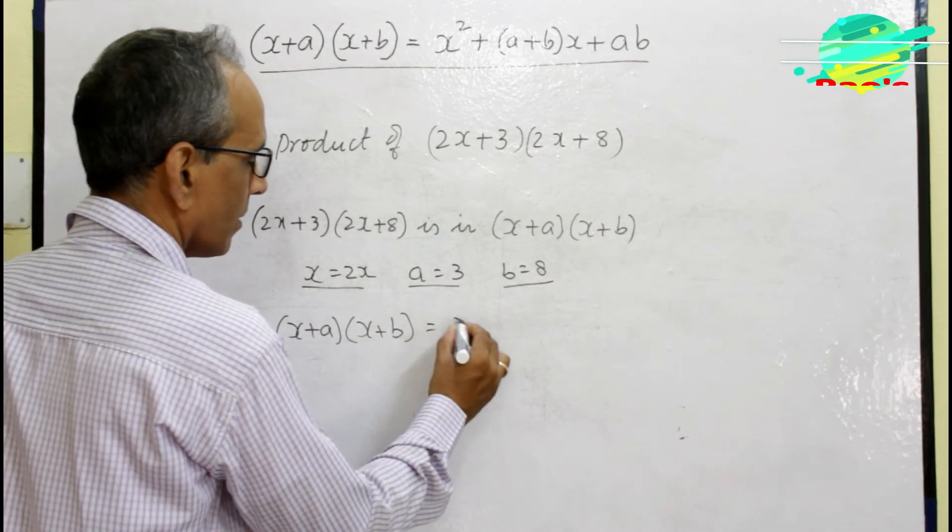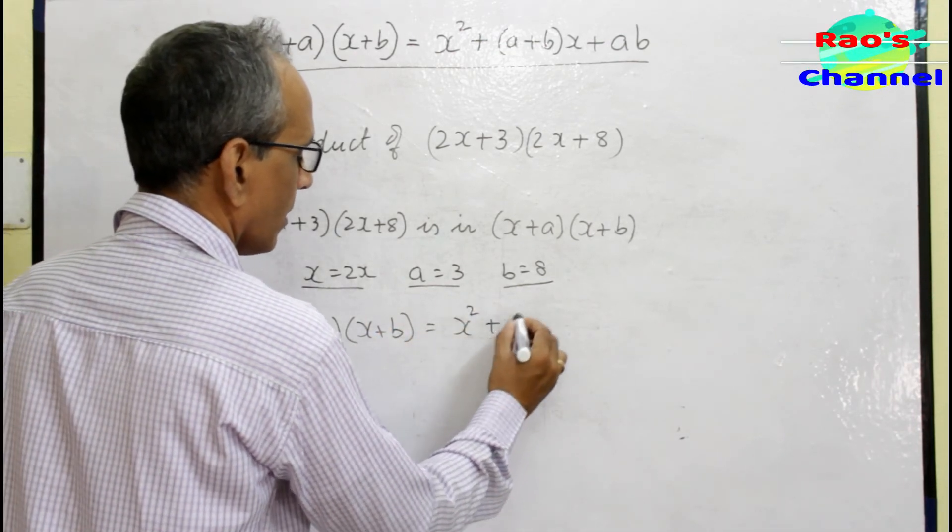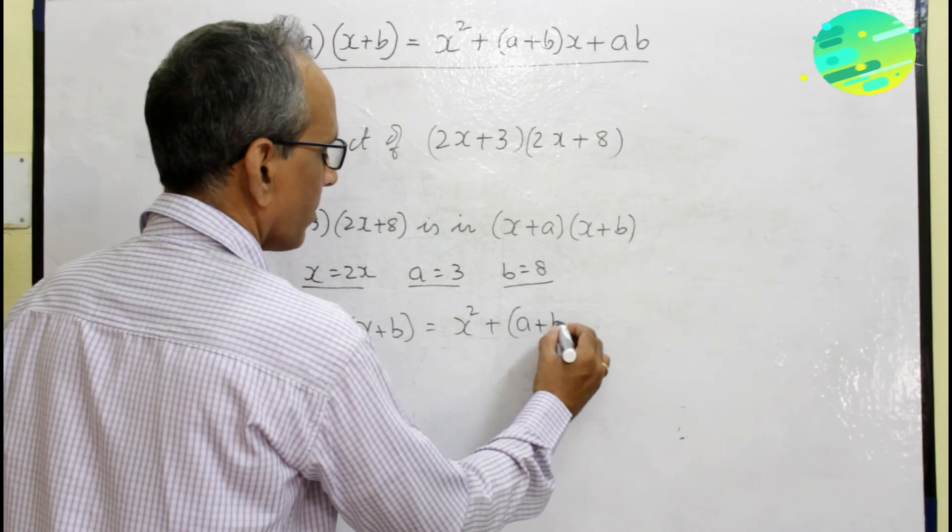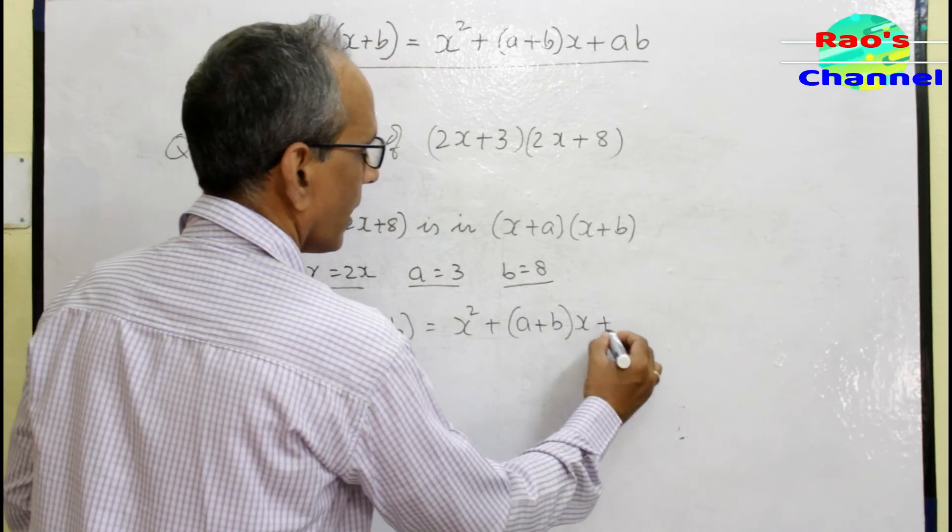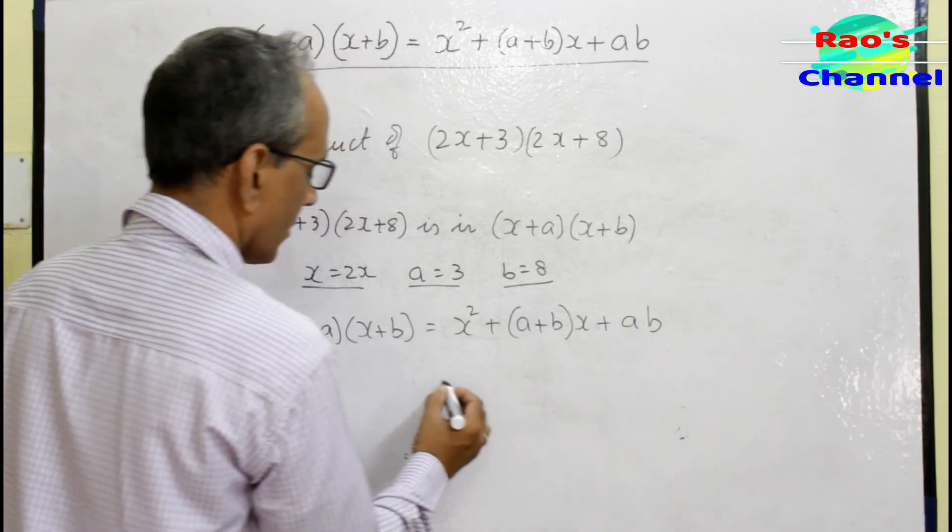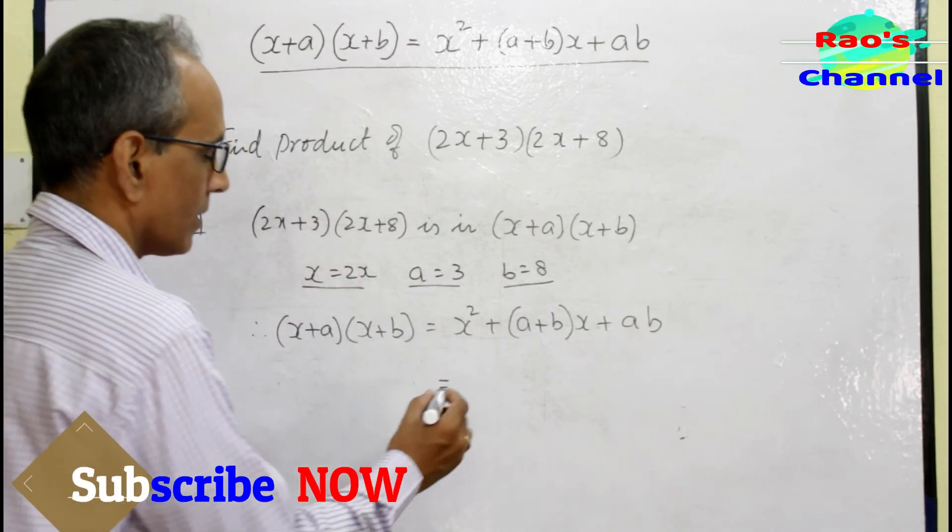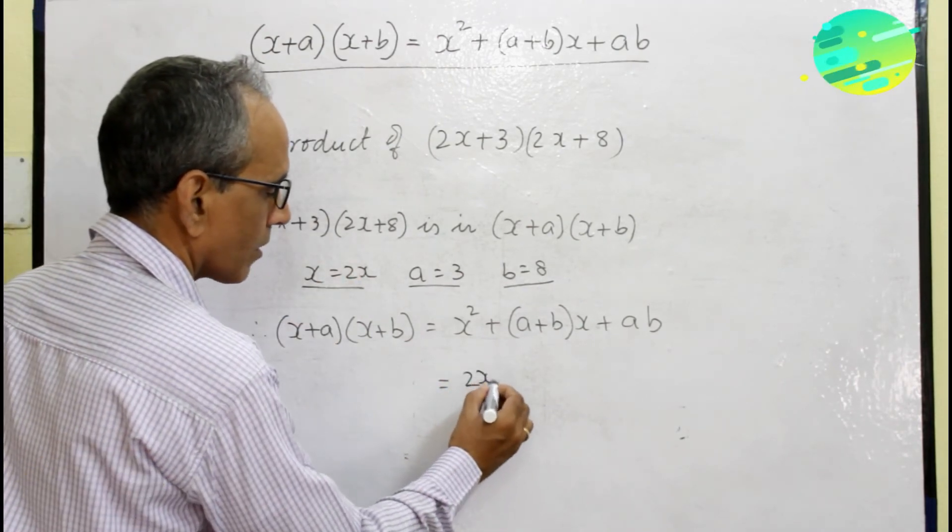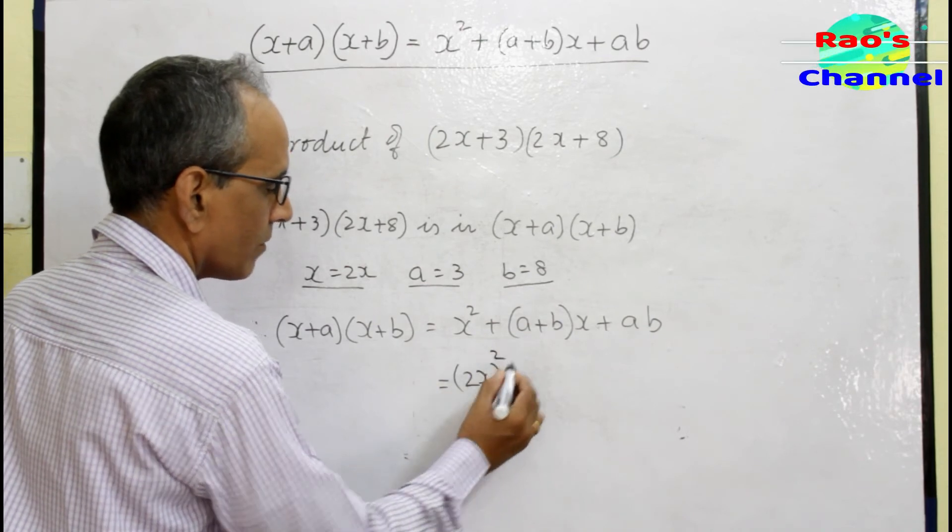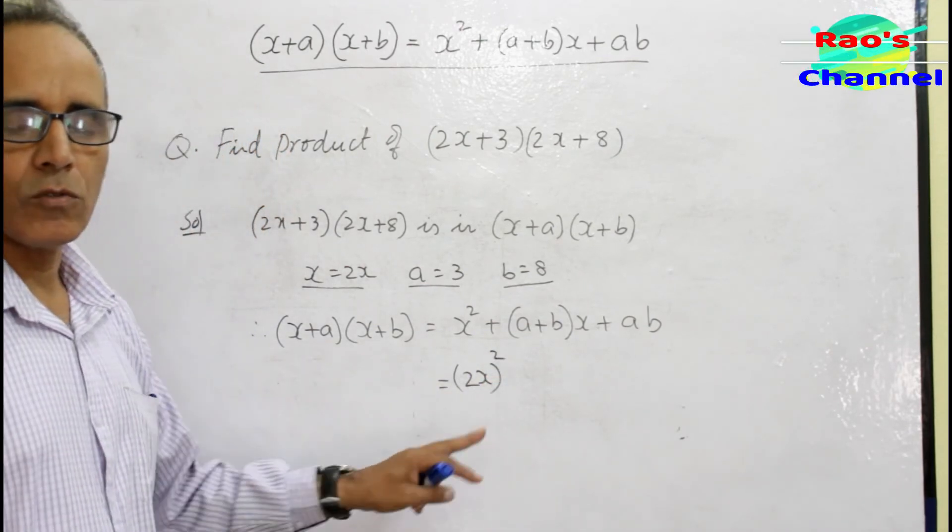Now let me use the identity in full measure. Therefore (x+a)(x+b) = x² + (a+b)x + ab. Let me complete the x, that is 2x, so (2x)². Remember, whenever you find the square of any term, use the bracket for that side.